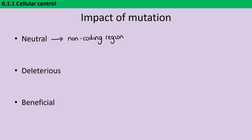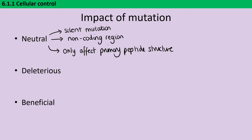The second reason is that we might see what's called a silent mutation — essentially this means that the sequence of the DNA changes but it doesn't affect the sequence of the protein. The third reason is that although the sequence of the polypeptide may change, if that particular amino acid isn't important for the folding of the protein or for its interaction with other molecules — say it's not part of an enzyme's active site — then the mutation is still selectively neutral.